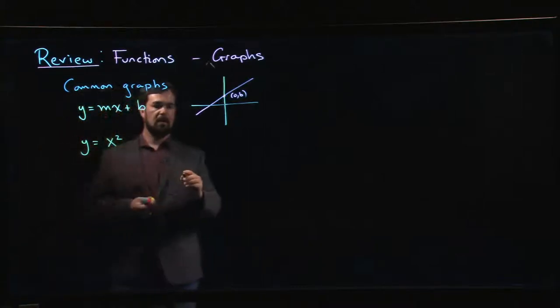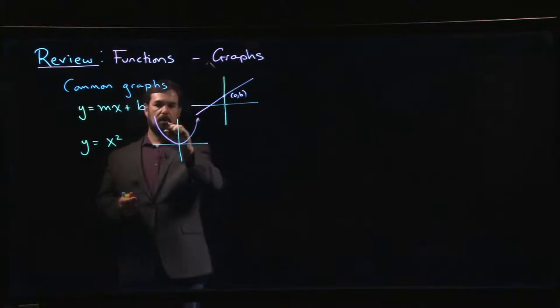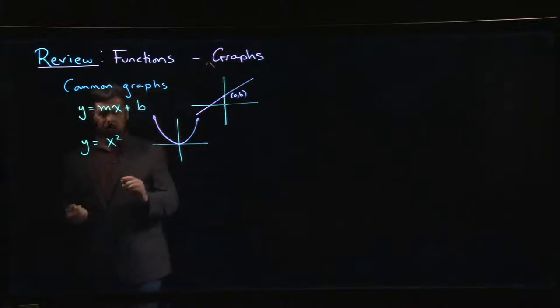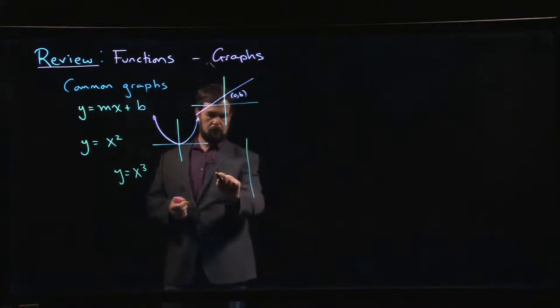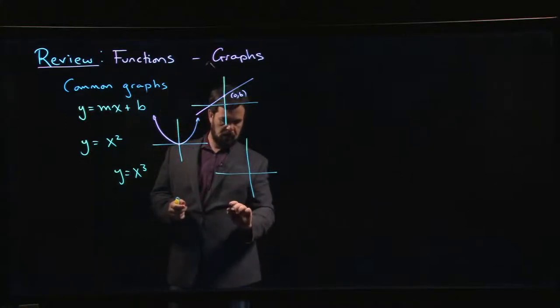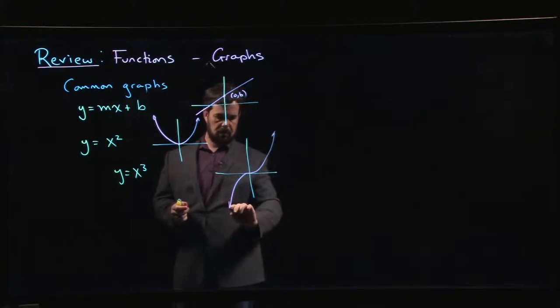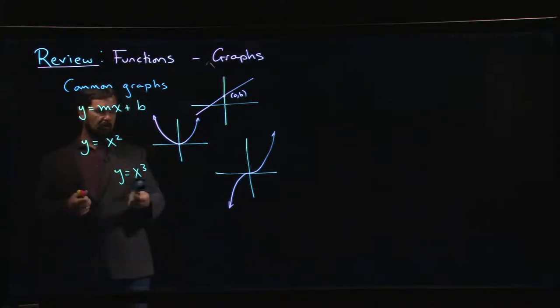We have the basic quadratic, y = x². This is a parabola opening upwards, vertex at zero zero, something like that. We could go to the cubic, y = x³. The graph of the cubic looks something like this: starts down here, comes up, flattens out as it goes for the origin, and then it heads up.